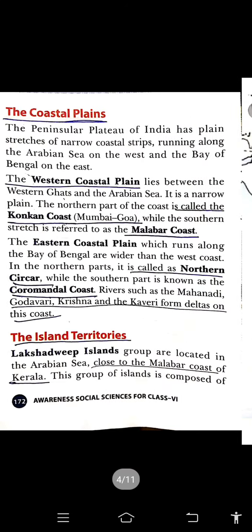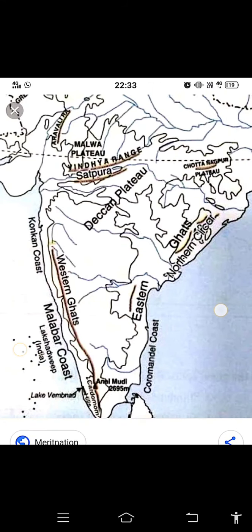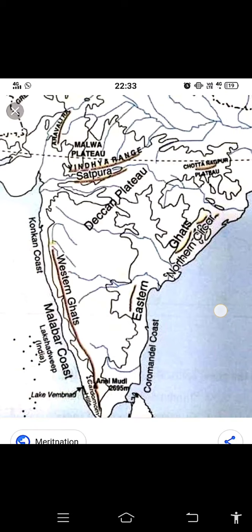The second physical division is island territories. First of all, what is an island? An island is a piece of land which is surrounded by water from all sides. The Lakshadweep Islands are a group located in the Arabian Sea, close to the Malabar coast of Kerala. Lakshadweep is not one island — it is a group of islands. This group of islands is composed of small coral islands.